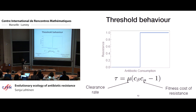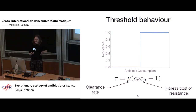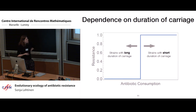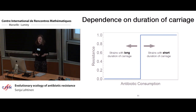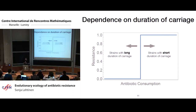This model predicts threshold-like behaviour and no coexistence. But crucially, the antibiotic consumption rate at which the switch from sensitivity being beneficial to resistance being beneficial occurs depends on the clearance rate — so on the duration of carriage. Strains with a low clearance rate, that is a long duration of carriage, are predicted to switch to resistance at a lower rate of antibiotic consumption. The intuition is that if you have long episodes of carriage, the probability of being exposed to antibiotics during that episode is higher, and therefore it becomes worth paying the fitness cost of resistance at a lower rate of antibiotic consumption.